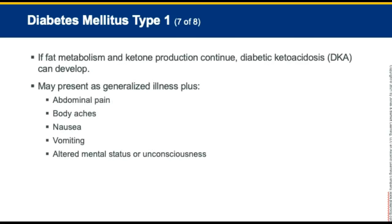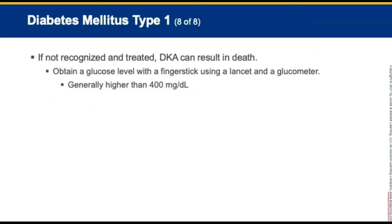If fat metabolism and ketone production continue, a life-threatening illness called diabetic ketoacidosis, or DKA, can develop. DKA may present as generalized illness along with abdominal pain, body aches, nausea, vomiting, altered mental status, or unconsciousness if severe. If not rapidly recognized and treated, DKA can result in death. Obtain a glucose level with a finger stick using a lancet and a glucometer. Diabetic ketoacidosis is generally associated with a blood glucose level higher than 400 mg/dL.